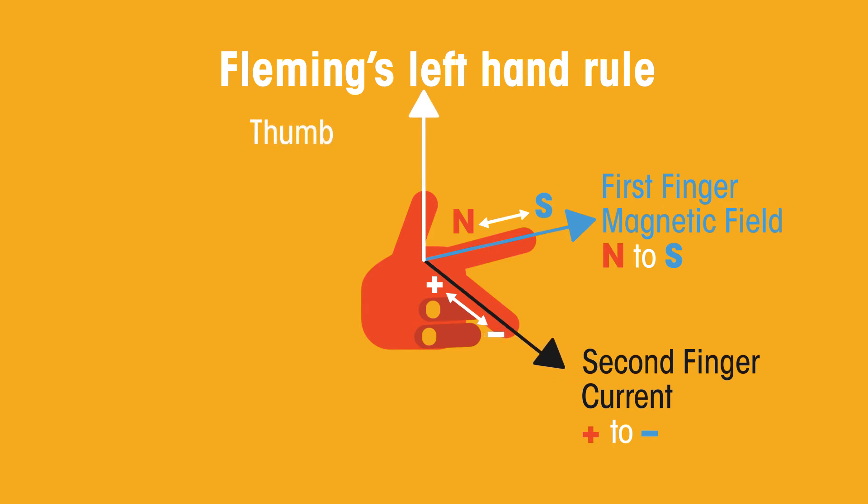Your thumb represents the direction of movement. Try to remember it this way: thumb, movement. Your first finger, magnetic field. Second finger, current.